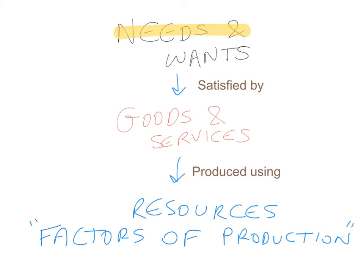Those needs and wants that people have are satisfied by consuming goods and services. Goods are tangible — they are things that we can touch, like a phone, an iPad, a chair. Services are activities that are delivered to us or performed for us by other people, and they satisfy a need or a want, like going to the hairdresser or going to a restaurant.